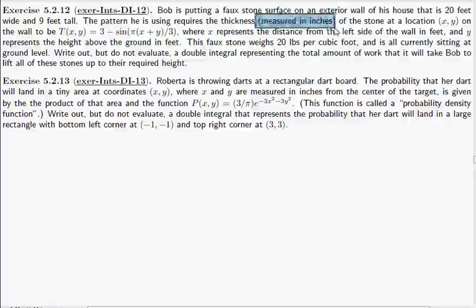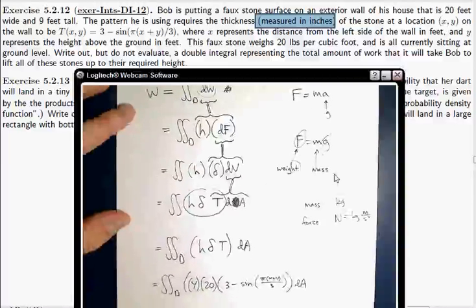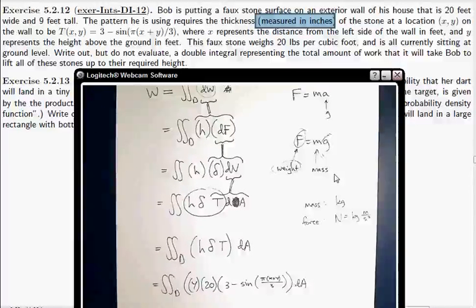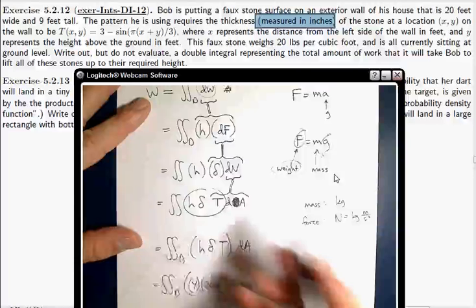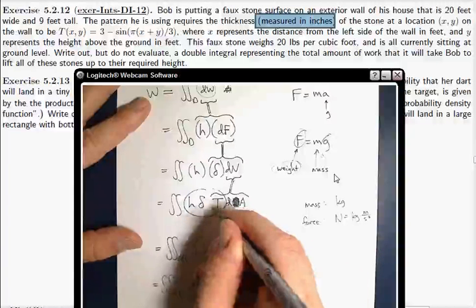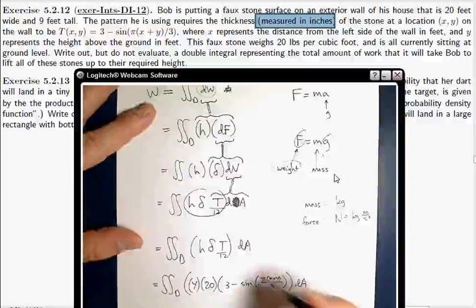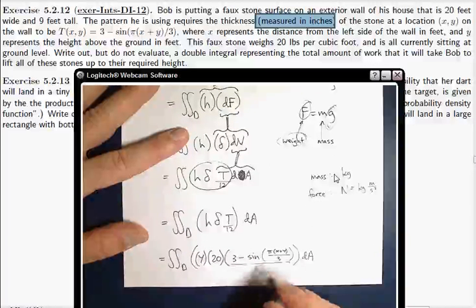So thickness is measured in inches. What I really need to do here, since I want to have everything be in feet, the density is in pounds per cubic foot, the dimensions of the wall are all in feet, it's just easier to have everything in feet. This thickness needs to be in feet, so that shouldn't be T, it should be T divided by 12. So, sorry about that, T over 12, so this is all over 12.